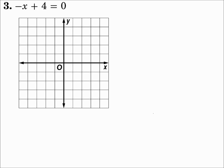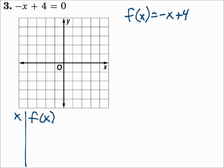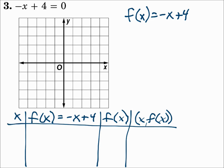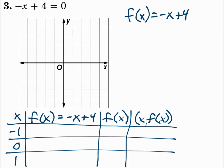Number 3: negative x plus 4 equals 0. Everything is already on one side with a 0 on the other, so replace the 0 with f of x. So f of x equals negative x plus 4. Make your table with the x column, the f of x equals negative x plus 4 column, the f of x column, and the ordered pair x comma f of x column — remember that's x comma y. Use x values negative 1, 0, and 1. Substitute in negative 1: f of negative 1 is negative of negative 1 plus 4 — be careful there.